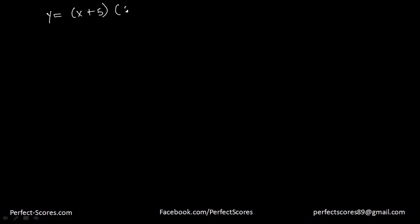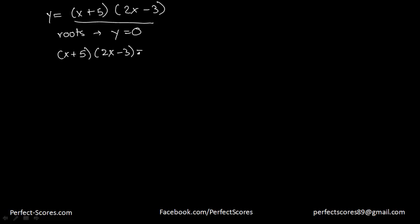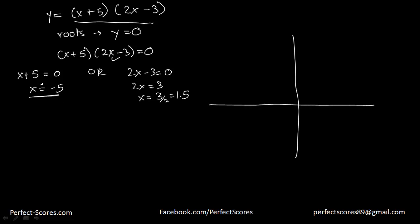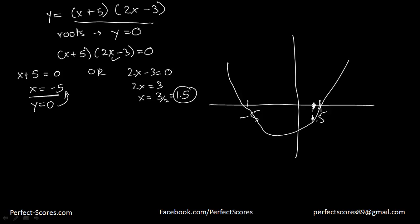Let's take another example: y is equal to x plus 5 times 2x minus 3. The roots are the values of x where y is 0, so we set x plus 5 times 2x minus 3 equal to 0. Either x plus 5 equals 0, giving x equals negative 5, or 2x minus 3 equals 0, giving x equals 3 over 2, which is 1.5. So the graph will have y equal to 0 at x equals negative 5 and x equals 1.5.